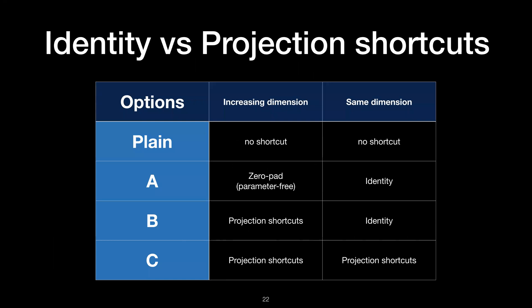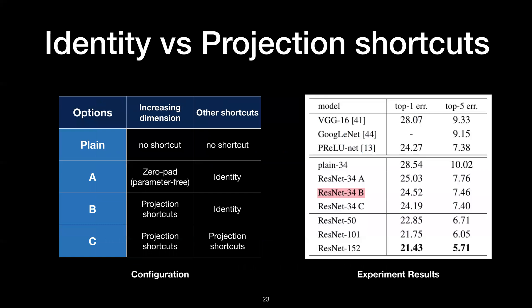Now I'm going to discuss some of the experiments. First, I want to focus on the identity versus projection shortcuts. In the paper, the authors compared four different options where the plain network uses no shortcut at all for every layer. For option A, they use zero padding for the increasing dimensions while they keep using identity connection for the same dimension. For option B, they use projection shortcuts - they change the zero padding to the projection shortcuts and keep the identity connections for the same dimension. And lastly, option C uses projection shortcuts for everything.